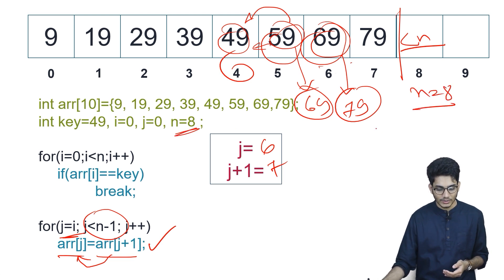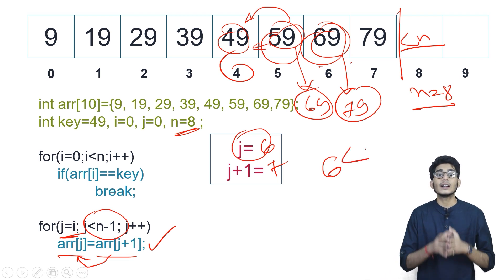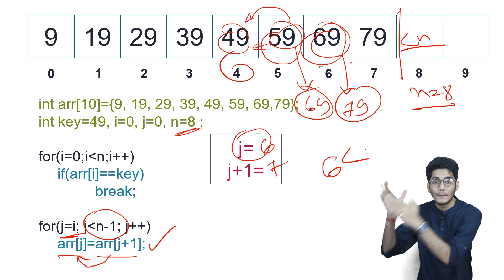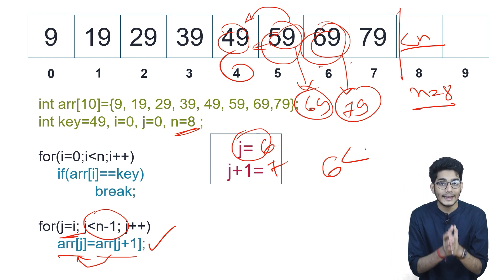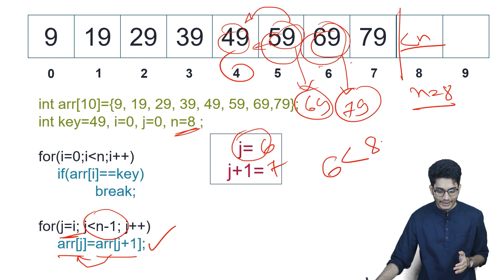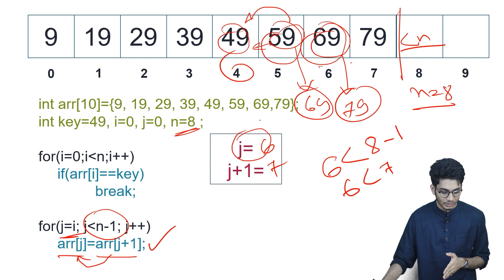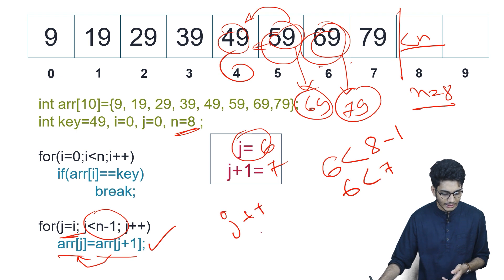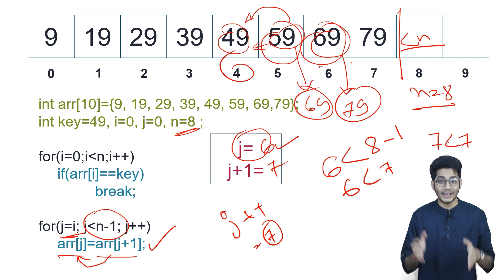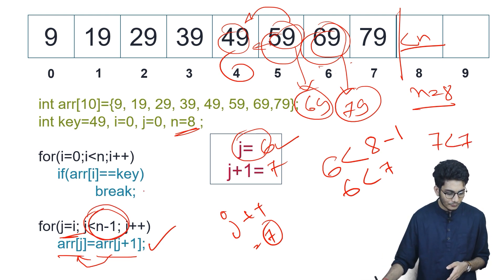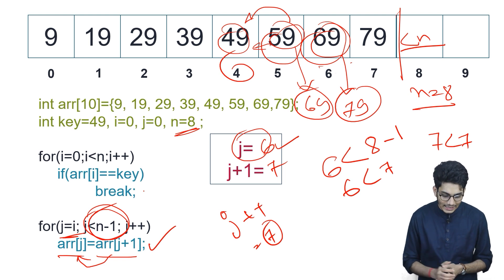n equals 8. The current value of j is 6 and we are traversing up to n minus 1, which is 7. Since 6 is less than 7, this portion executes. We increment j to 7. Now 7 is not less than 7, so this loop is terminated.